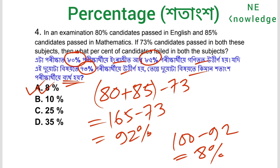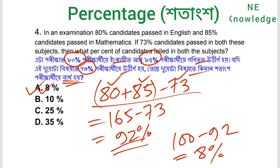At least one subject pass: students who passed English, or passed Mathematics, or passed both. So 100 minus 92 equals 8 percent fail in both subjects. That is the answer.